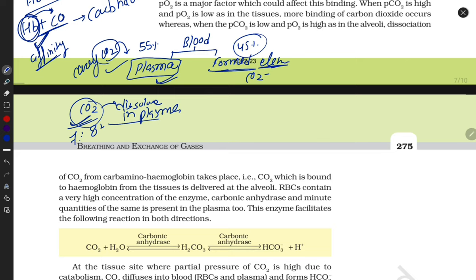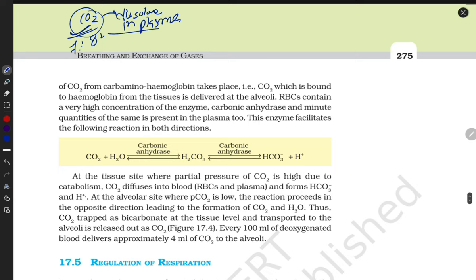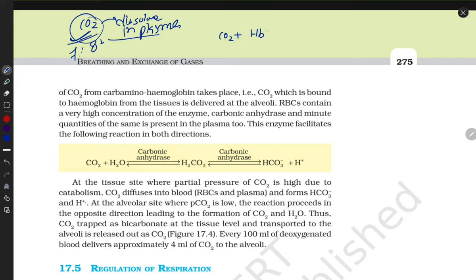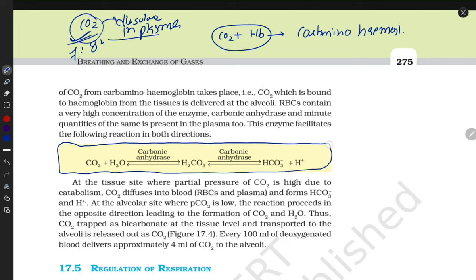Seven to eight percent CO2 can be transported by plasma, and the remaining part of CO2 will be transported by hemoglobin. CO2 binds with hemoglobin and forms carbamino hemoglobin. Some reaction is present in RBC. Assume this is the RBC structure.